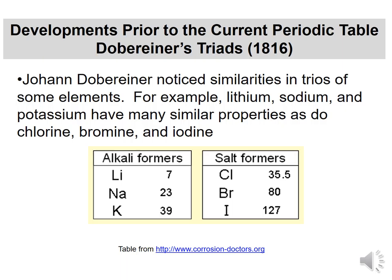These numbers — 7, 23, 39 — are relative masses. Lithium is seven times more massive than hydrogen, sodium is 23 times more massive, and so on. When you put them in water, they form caustic or basic solutions, like lye and things like that. When you look at that development, you find some sort of set of patterns. So we have these trios being applied.